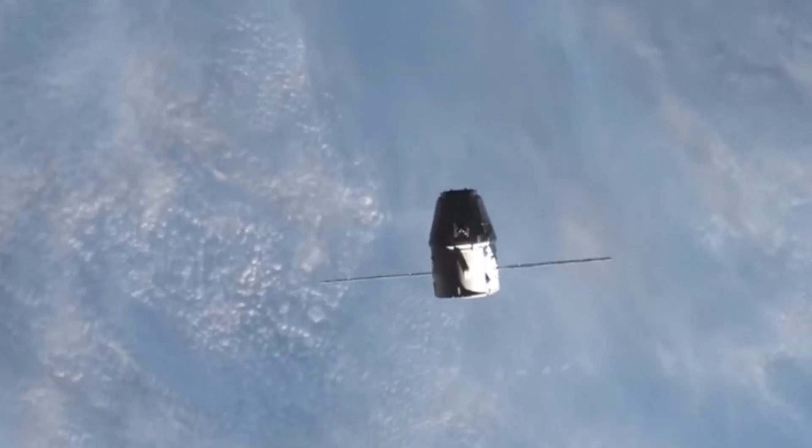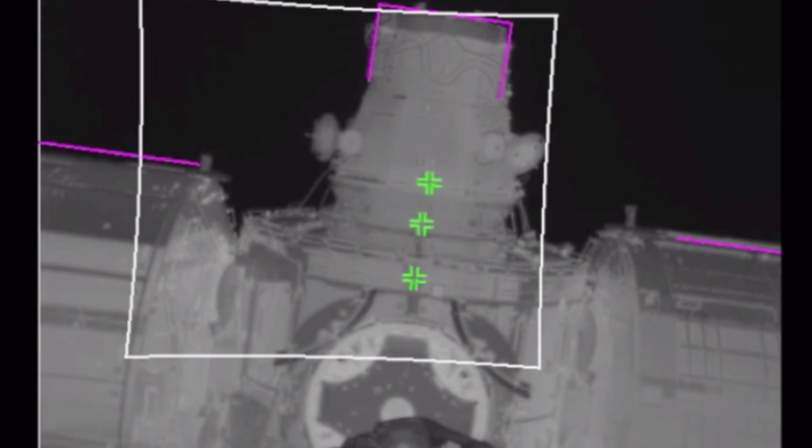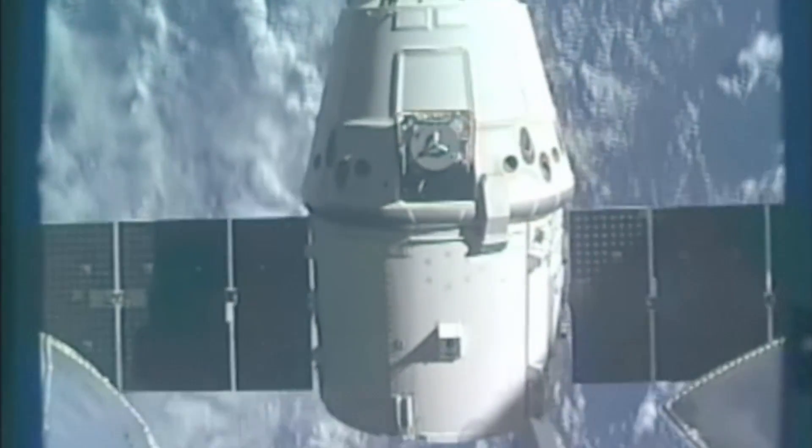Three: space thrusters. The Dragon V2 capsule has four Super Draco thrusters, each with an engine chamber made in a 3D printer.